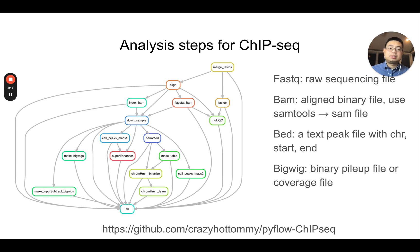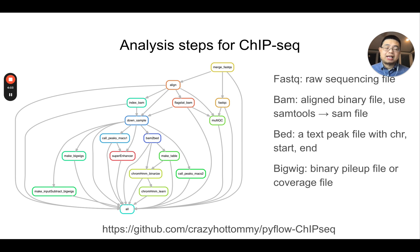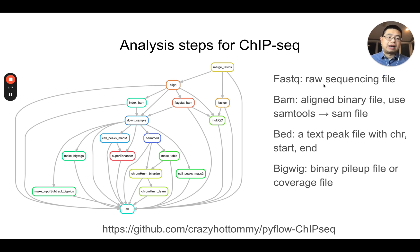These are the analysis steps for ChIP sequencing that I put together in a Snakemake pipeline. I used this pipeline to process hundreds of in-house generated ChIP sequencing datasets when I was at Cornell and MD Anderson Cancer Center. You can go to this link to find this pipeline. The first step is always getting the reads from the sequencer — those are the FASTQ files, the raw sequencing files.